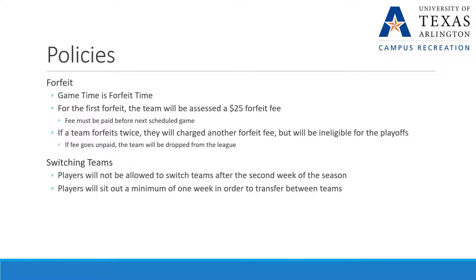Game time is forfeit time. If your team forfeits once, they will be assessed a $25 forfeit fee, and that fee has to be paid before the next scheduled game. If a team forfeits twice, they will be charged another forfeit fee but will be ineligible for the playoffs. If the fee goes unpaid, the team will be dropped from the league altogether. Players will not be allowed to switch teams after the second week of the season. If they choose to do so before the second week, they have to sit out a minimum of one week as a waiver wire transfer penalty between teams.